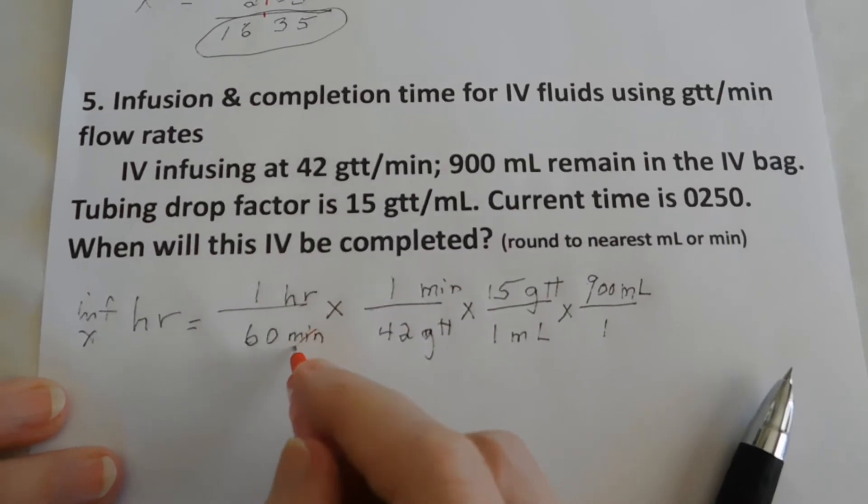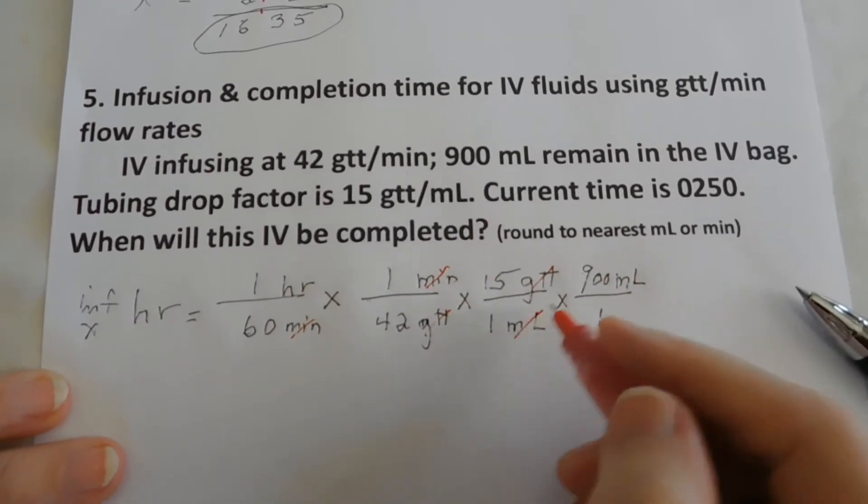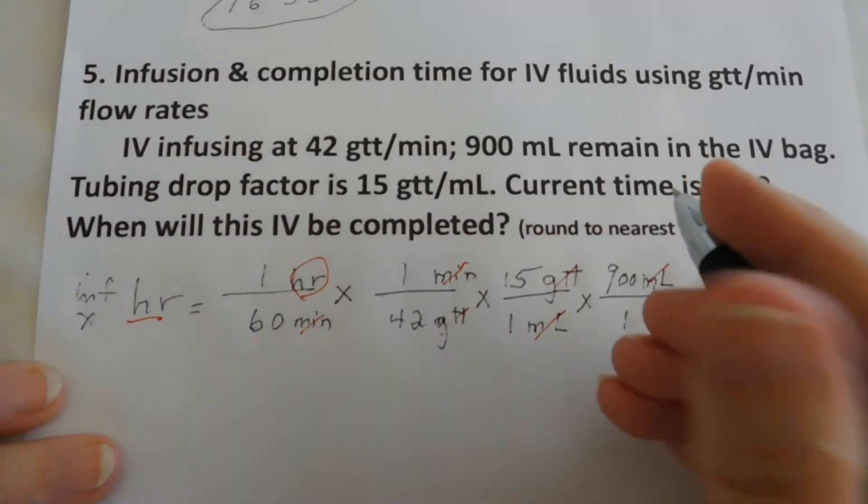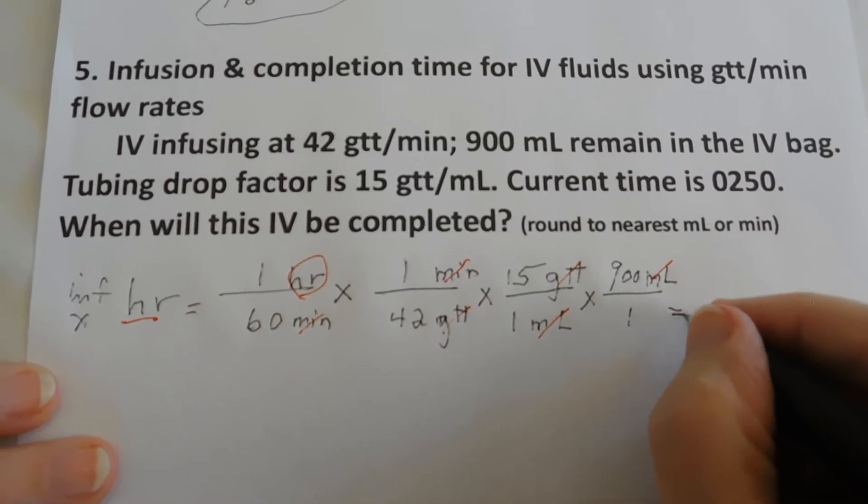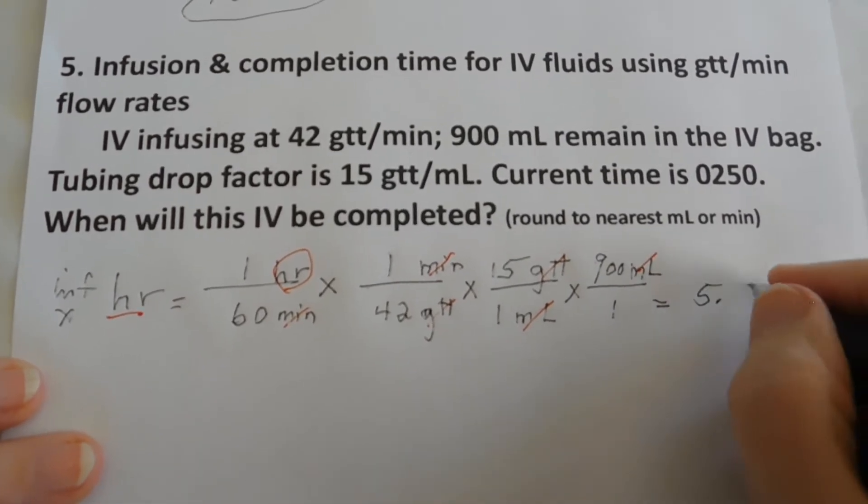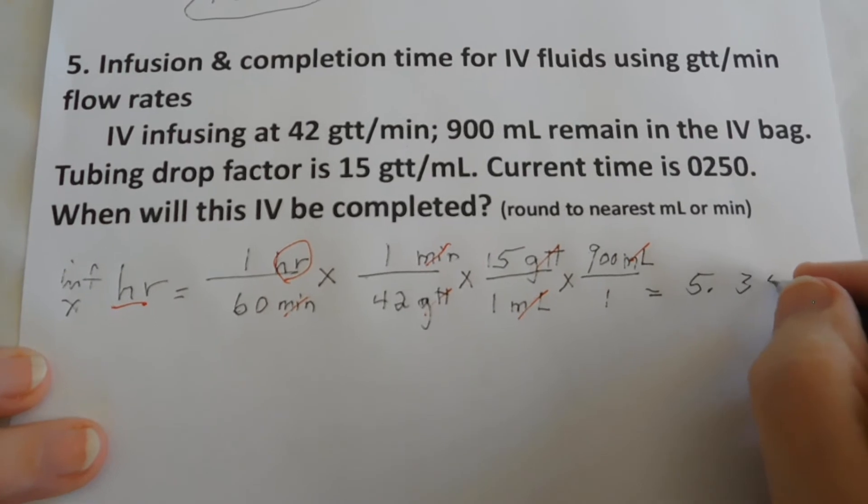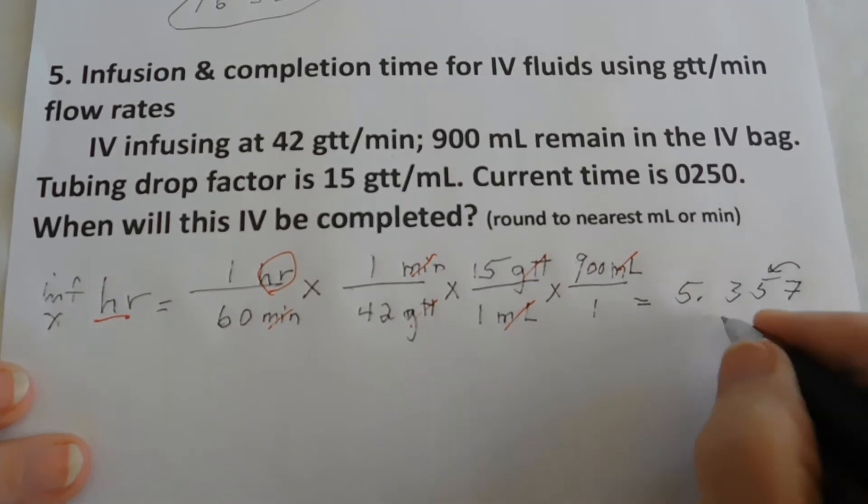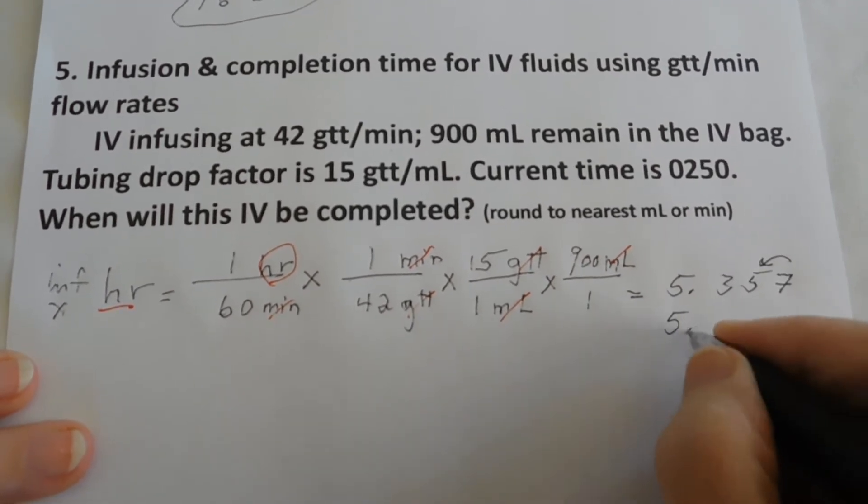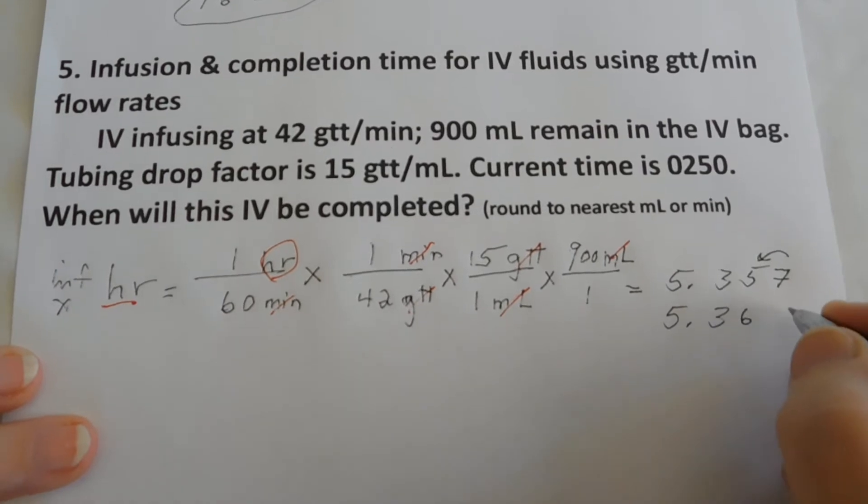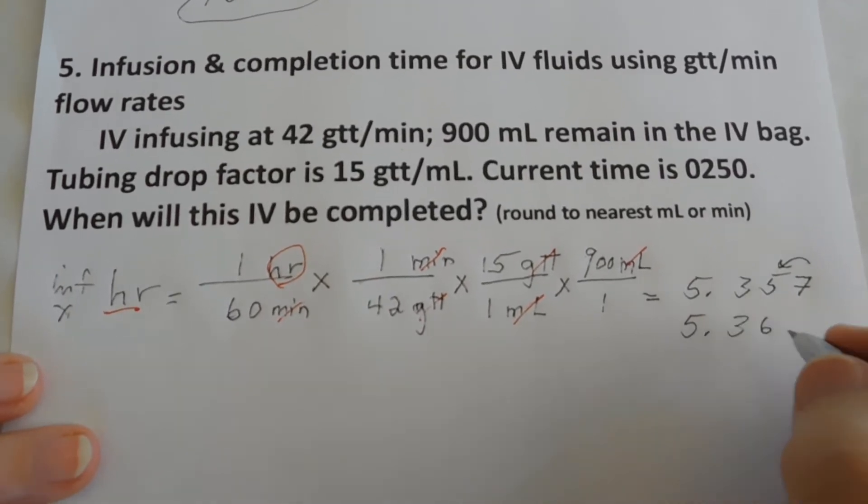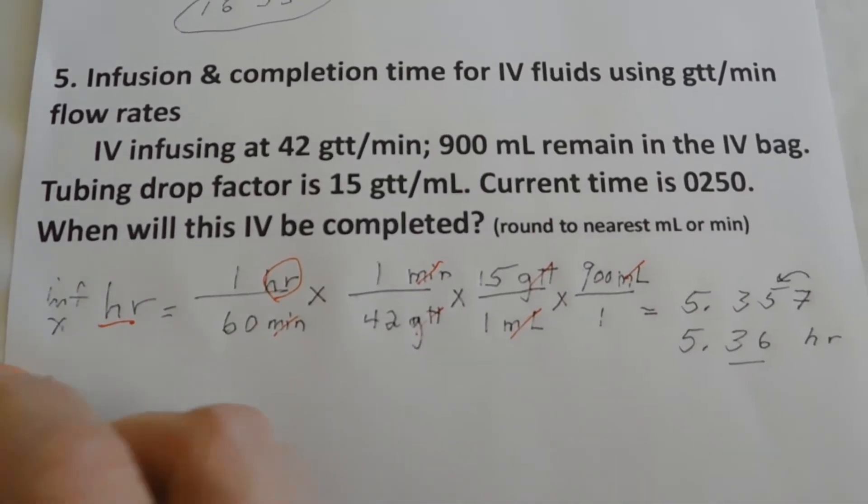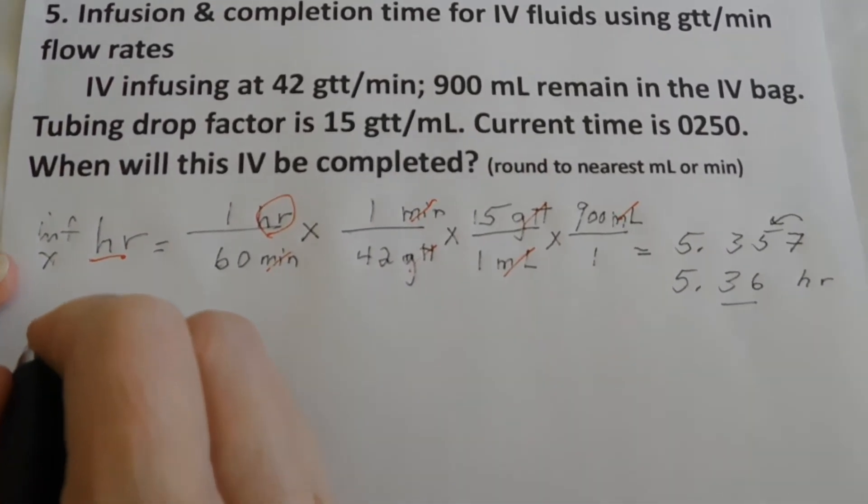Well, minutes cancel. Drops cancel. Mills cancel. We end up with hours, which is what we're trying to find. And we can calculate this out. And we get 5.357. We're going to round up there. So it'll be 5.36. 5.36 what? 5.36 hours. What we have to now find out is what is .36 of an hour in terms of minutes.